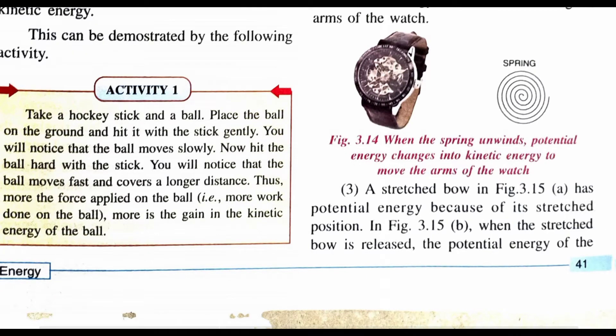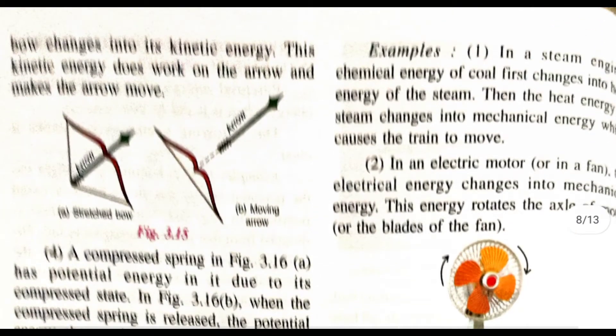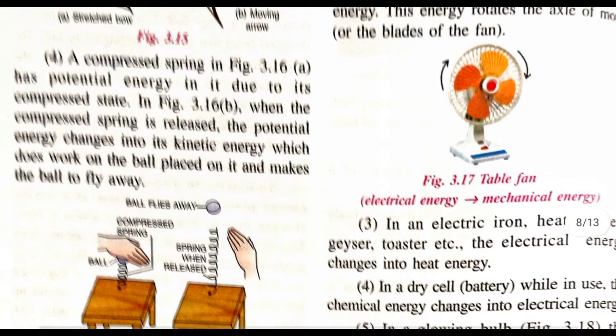As shown in Figure 3.15, when we stretch a bow, there is potential energy stored in it. When the stretched bow is released, that potential energy changes into kinetic energy, causing the arrow to move. Similarly, a compressed spring shown in Figure 3.16 has potential energy.